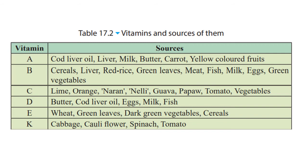Vitamin D sources include butter, cod liver oil, eggs, milk, and fish. Vitamin E sources include wheat, green leaves, dark green vegetables, and cereals. Vitamin K sources include cabbage, cauliflower, spinach, and tomato.